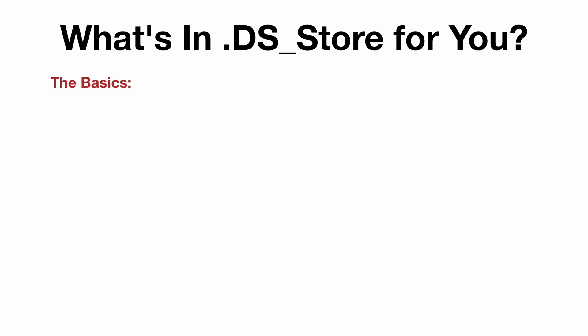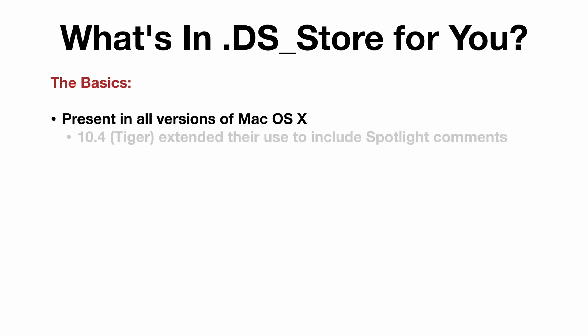We'll start with the basics. The .DS_Store file has been around for quite a while. Some documentation states that macOS 10 version 10.4 known as Tiger was the first version in which they appeared. However, they've actually been around since the initial release of macOS 10, 10.0 known as Cheetah. Tiger extended their use to support a new feature called Spotlight, and 10.4 was the first version that used DS_Store files to store Spotlight-related metadata, specifically comments.